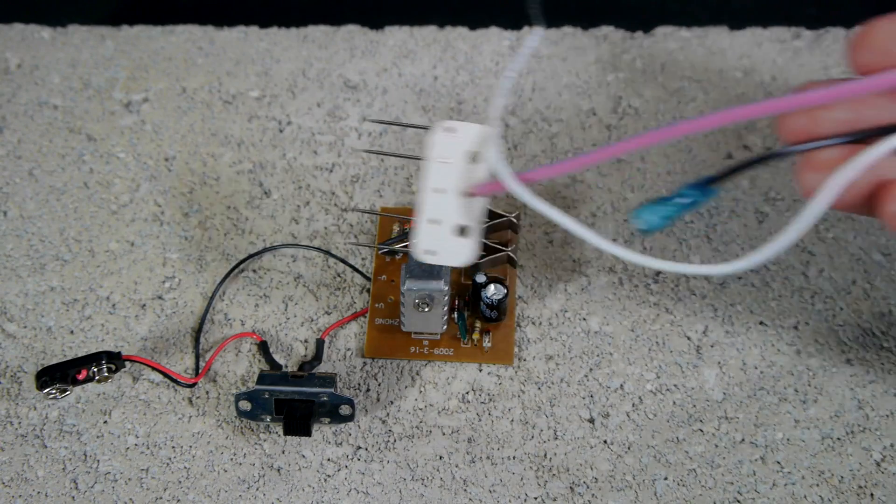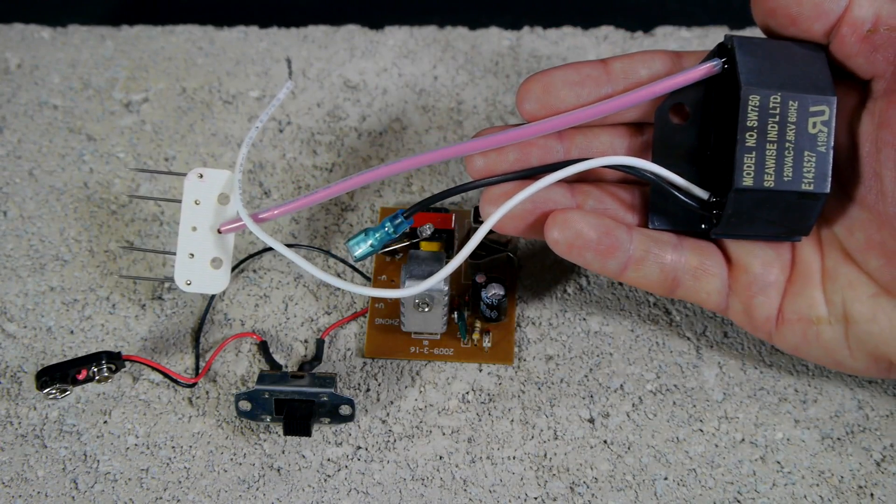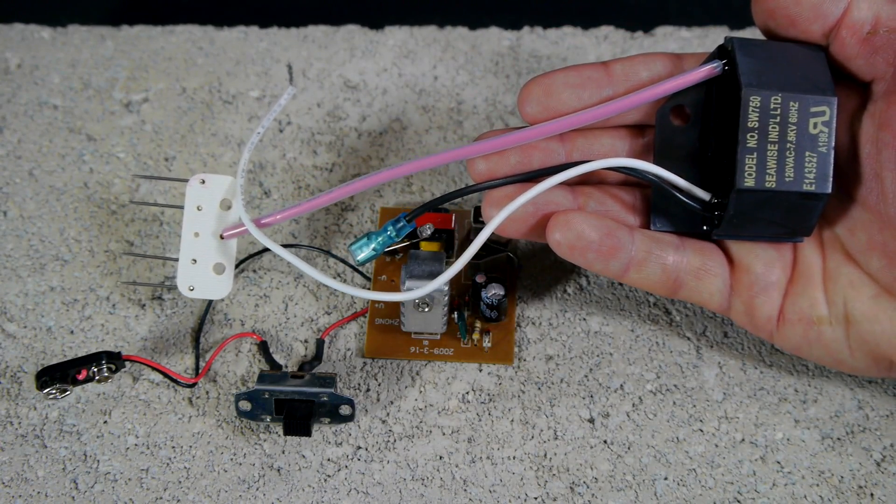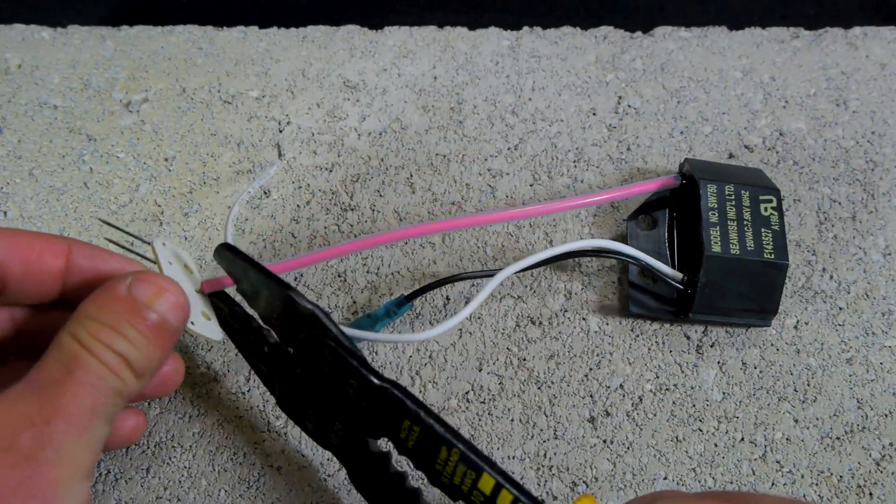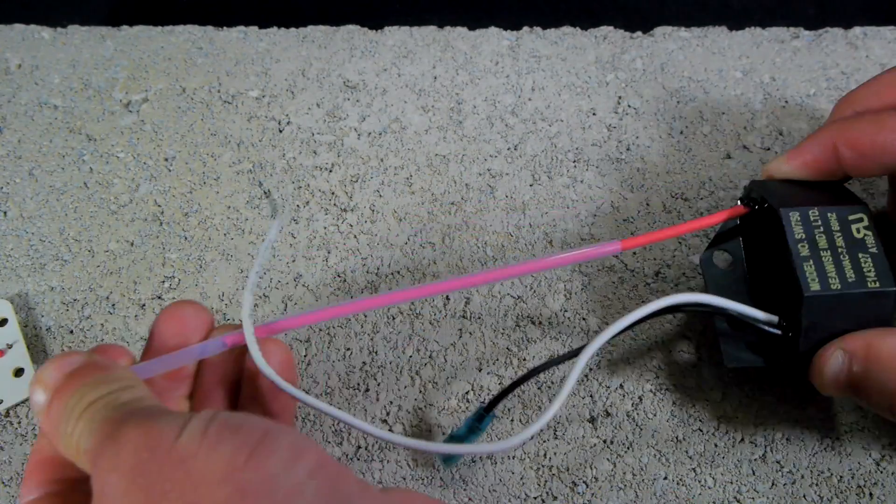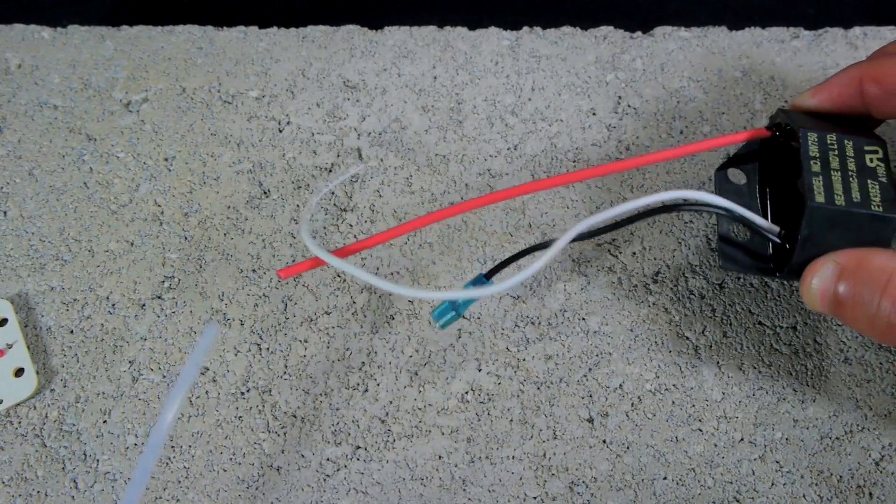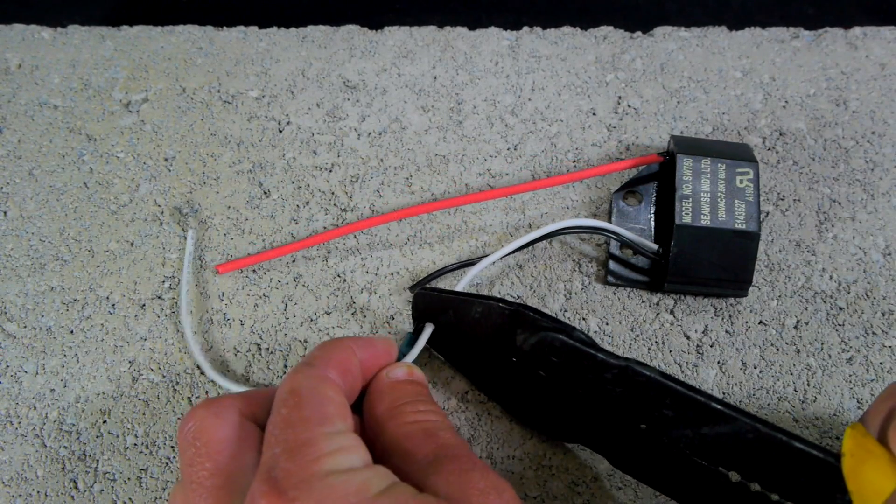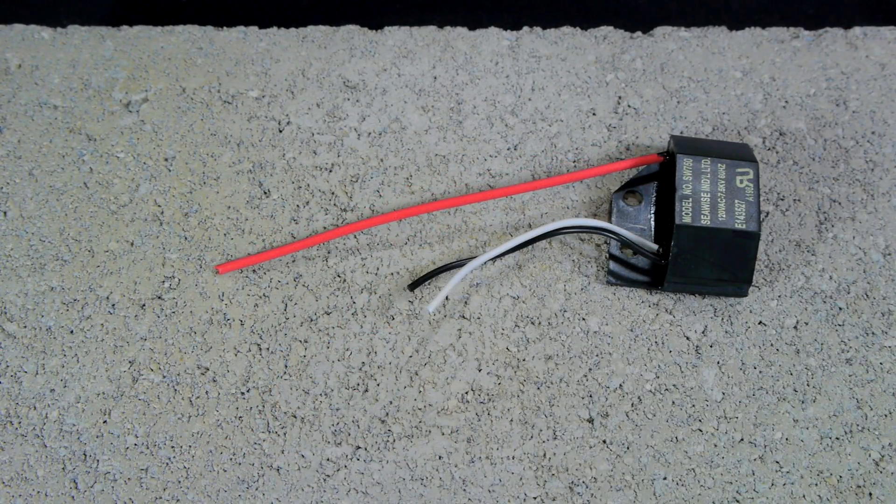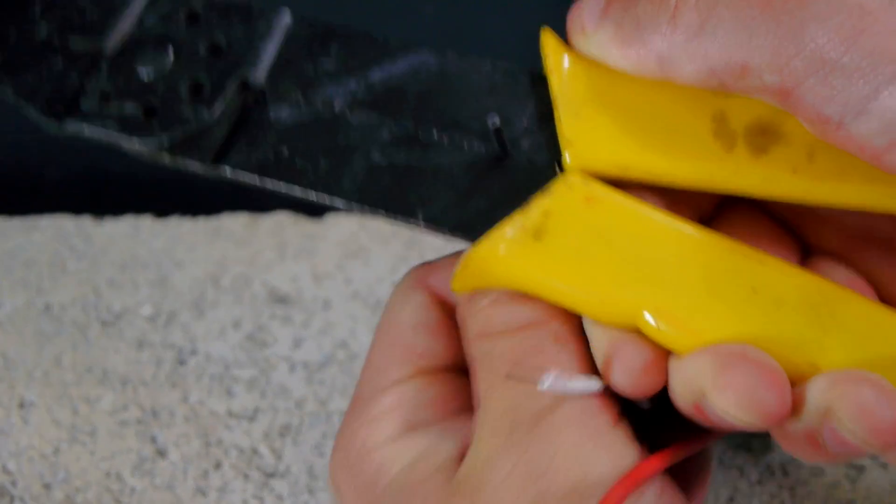With the power supply complete we can now finally move on to preparing the negative ion generator to plug into it. The end of the red wire is cut to remove the metal prongs and the plastic sheath is slid off as well. The black and white wires are also trimmed down slightly and the end of all three wires are stripped.